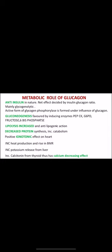Glucagon also has positive inotropic effects on the heart, increases heat production and raises BMR (thermogenic effect), increases potassium release from the liver, and increases calcitonin secretion from the thyroid, thereby decreasing calcium levels. This concludes the discussion of pancreatic hormones.